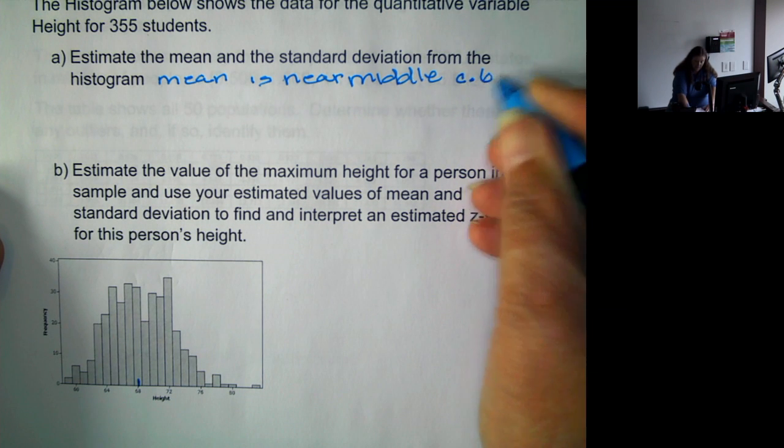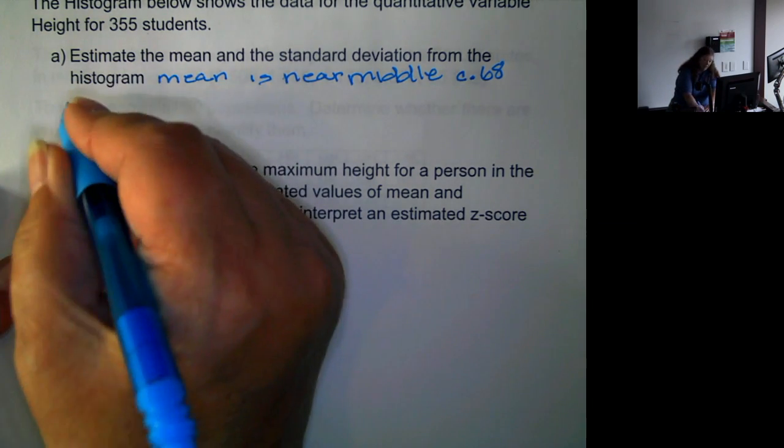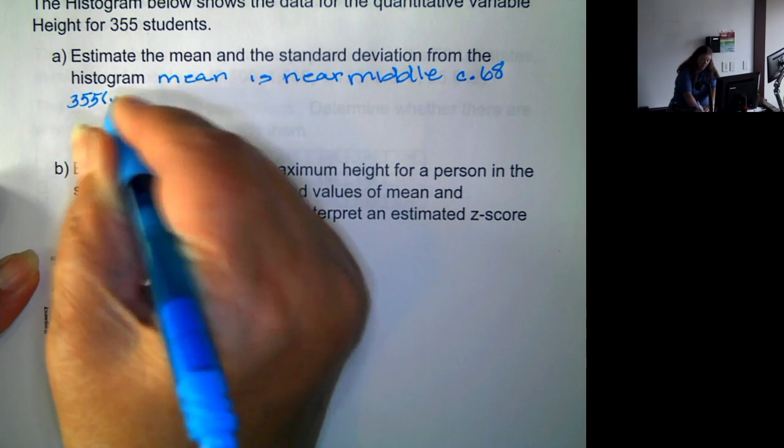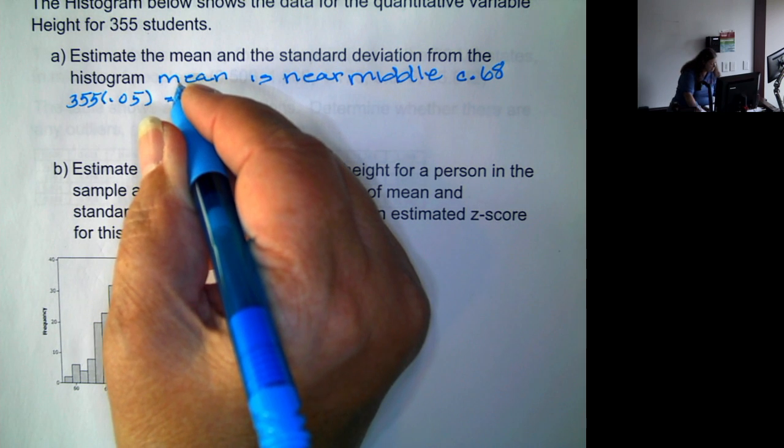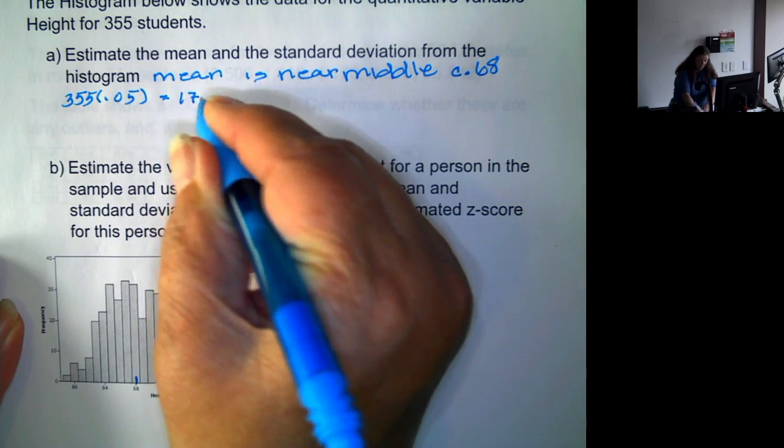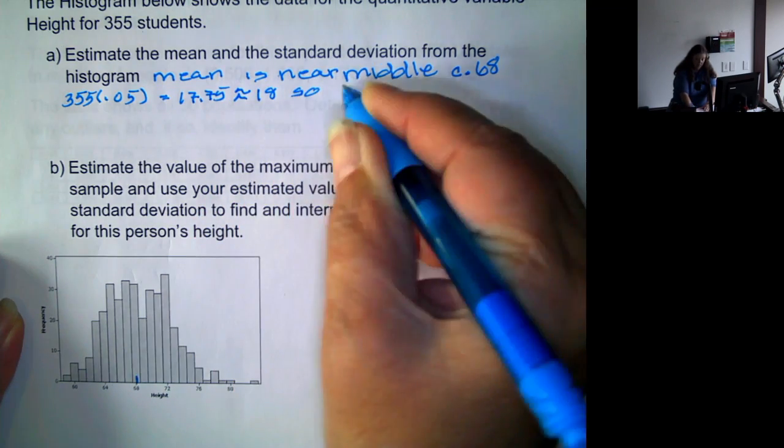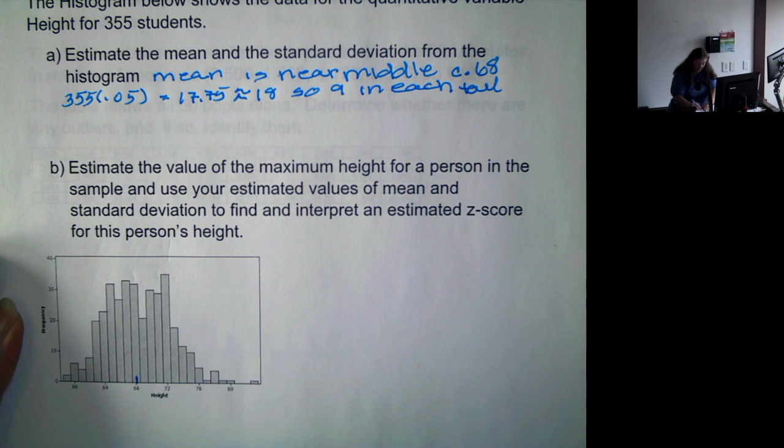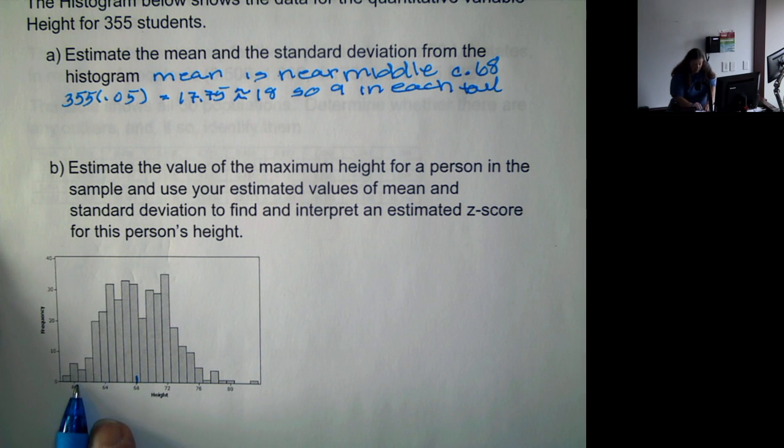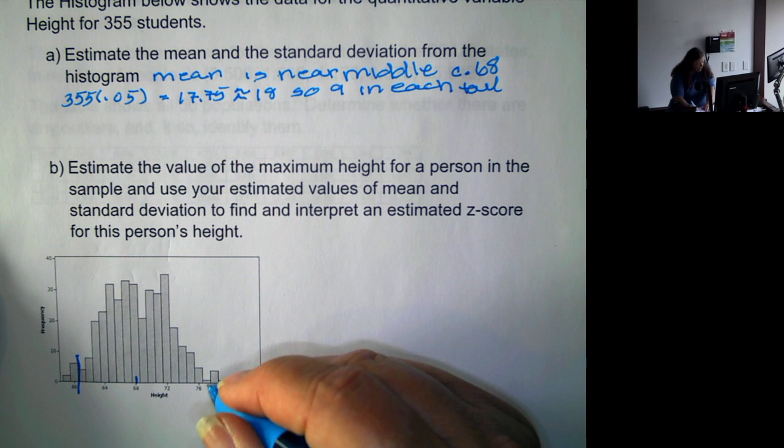Since it's symmetric and bell-shaped, we can use the 95% rule that says there would be about 9 in each tail. We get that because 355 times 0.05 is 17.75, which is approximately 18. So 9 in each tail. So we look at the left side, and 9 appears to be those. And on the right side, this appears to be about 9 values.